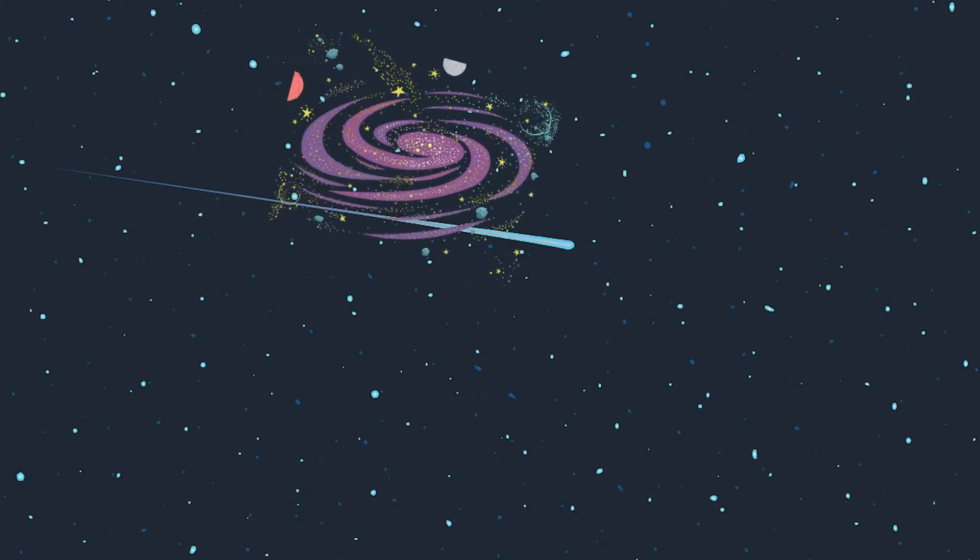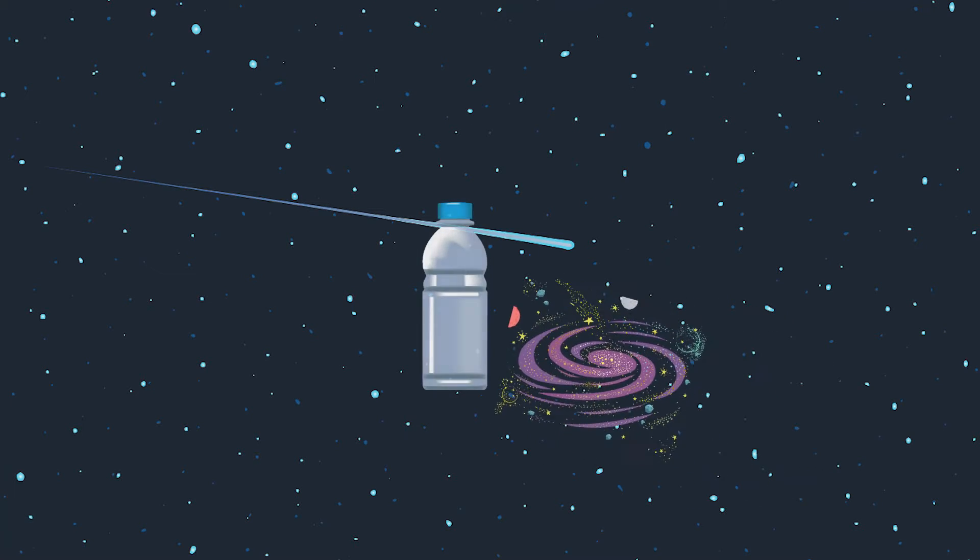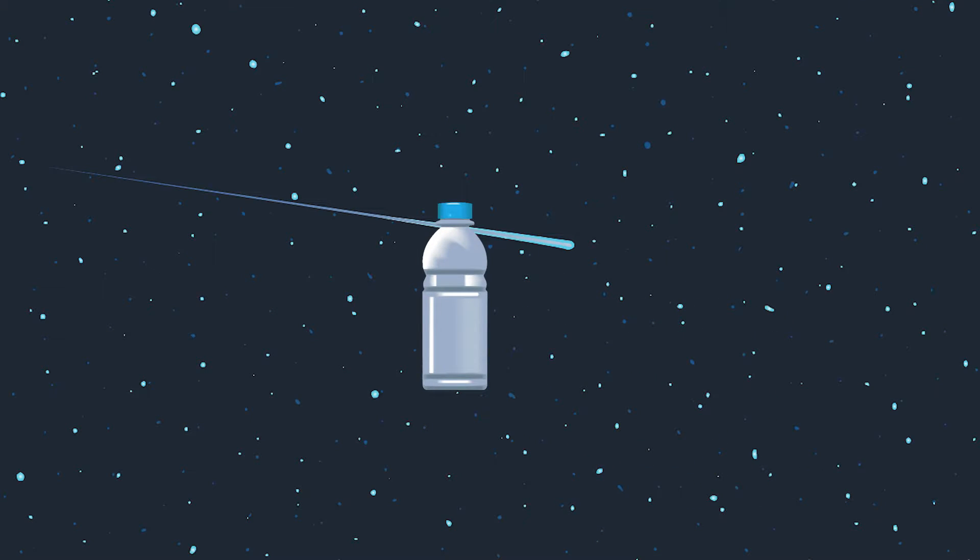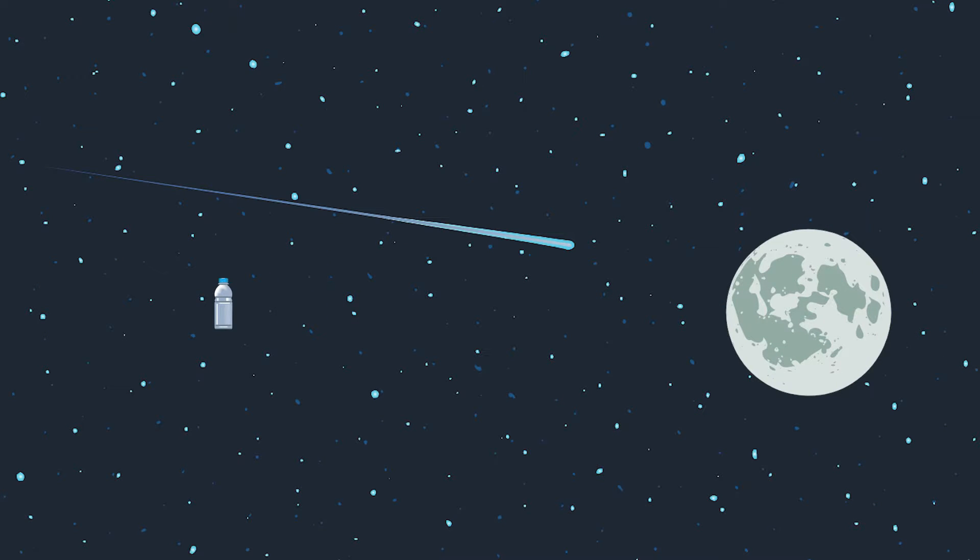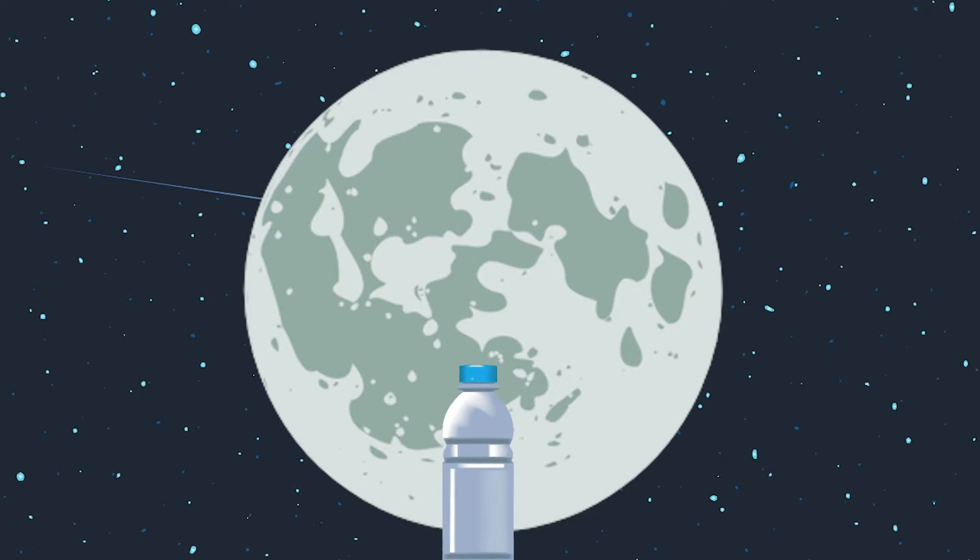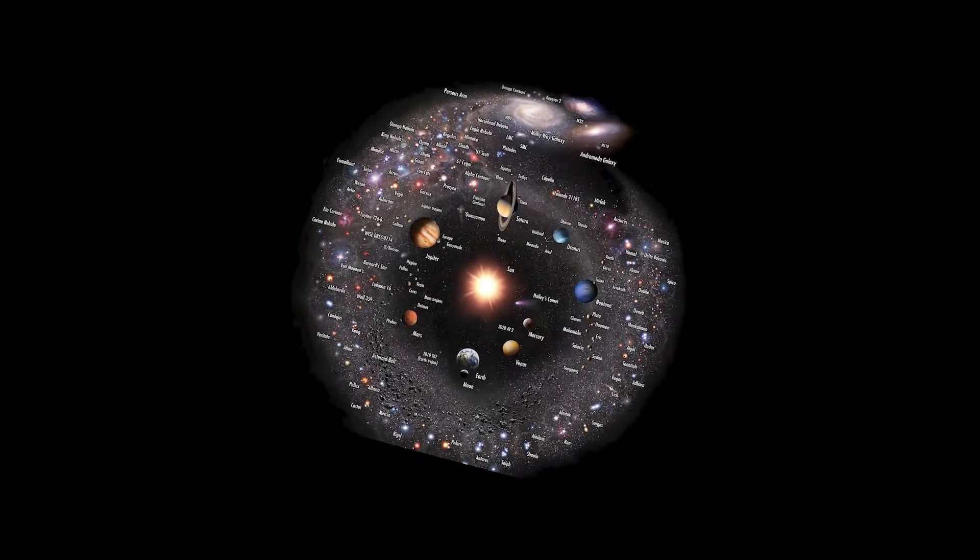To put this in perspective, imagine the size of our current observable universe being as big as a plastic water bottle, but then realizing everything in the unobservable universe is actually the size of the Moon. Now imagine this water bottle being in the center of the Moon, but everybody in the observable universe that was inside this water bottle had no idea or understanding of the Moon around the water bottle. This is a similar comparison to how big the unobservable universe actually might be.